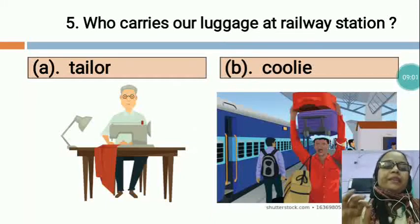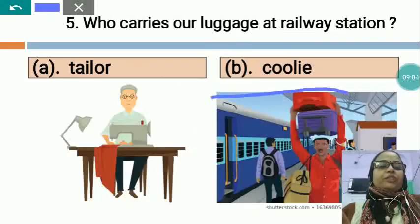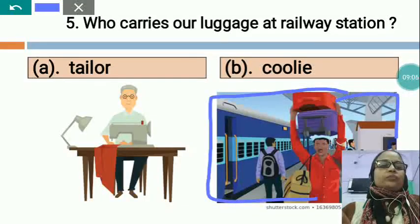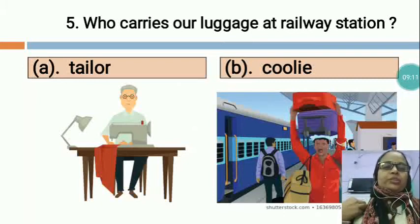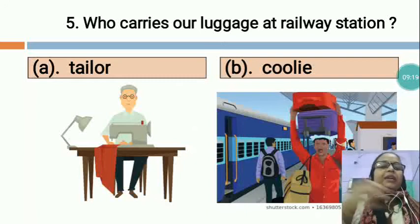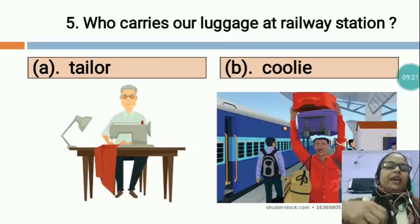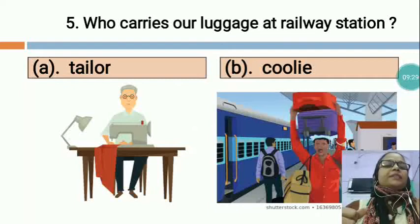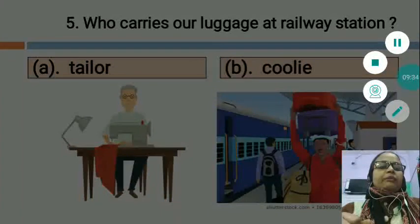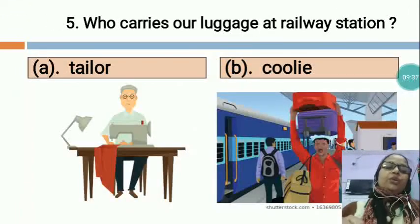Who carries our luggage at railway station? You can see this is the picture of the railway station. The tailor stitches our clothes, but the coolie carries our luggage at the railway station on their head and hangs the bags in hand also. So the coolie carries our luggage at the railway station. The correct option is B — COOLIE.